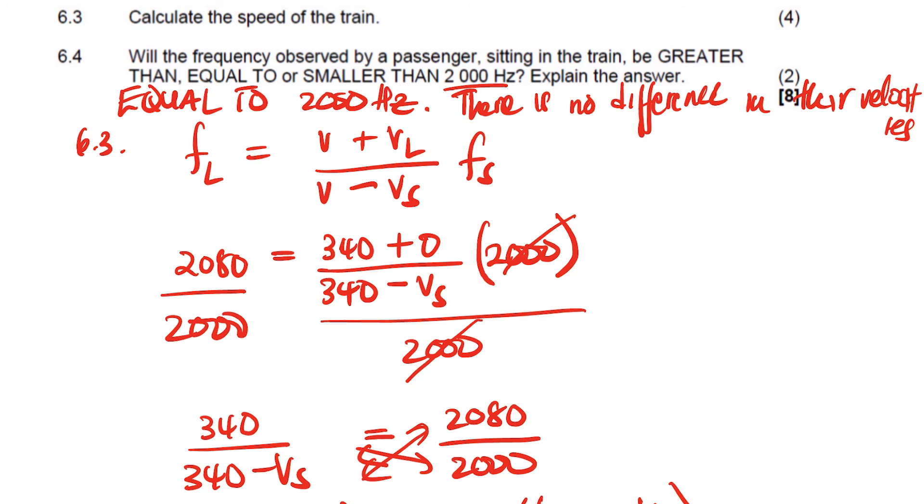There's no difference in their velocities. Or you can say the passenger's moving with the same velocity as the train. I hope that makes sense, guys. Cheers, bye.